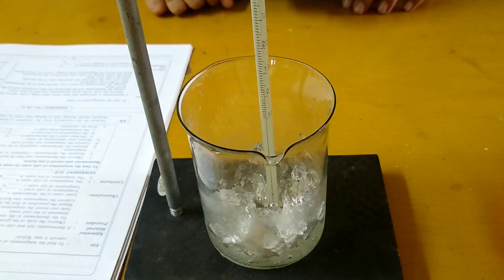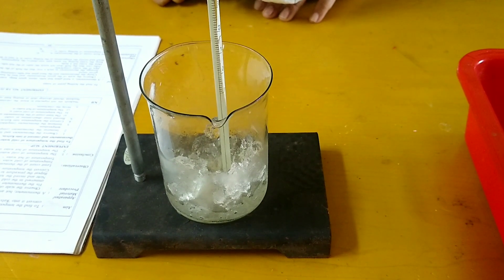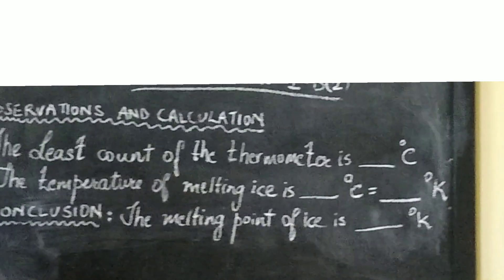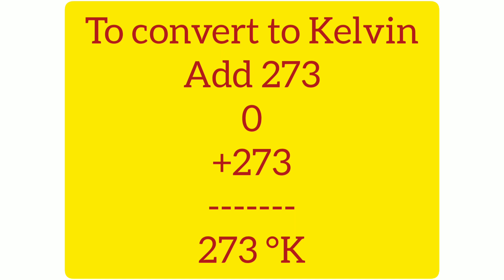Let us now note down our recordings. The least count of the thermometer is 1 degree Celsius. The temperature of melting ice is 0 degree Celsius. And as you convert it in Kelvin, you need to add 273. So, 0 plus 273 is 273 Kelvin.